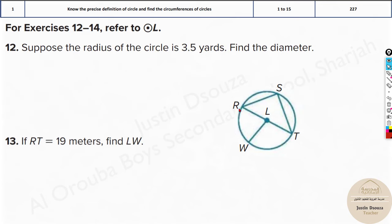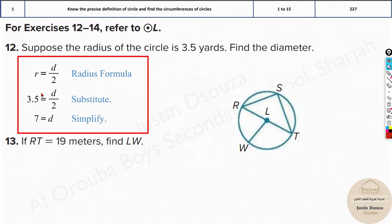Now, suppose the radius of the circle is 3.5 yards. Find its diameter. Just multiply this by 2. 3.5 times 2 is 7. That would be the answer.